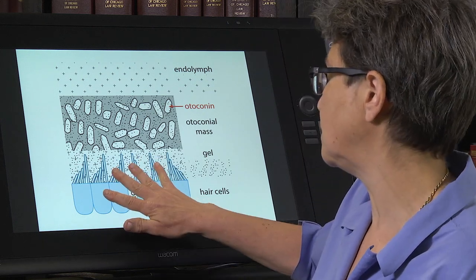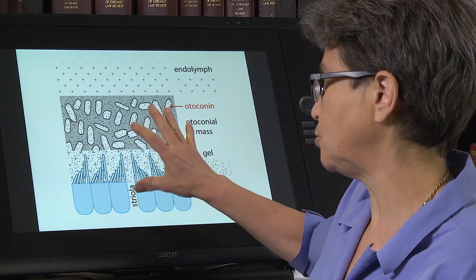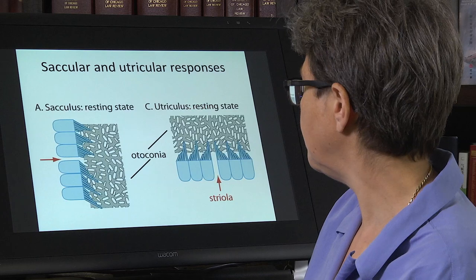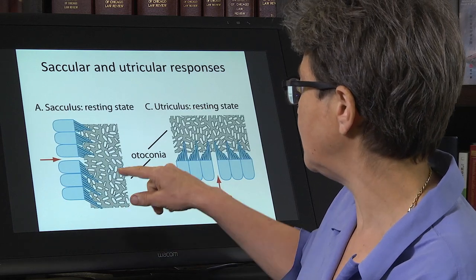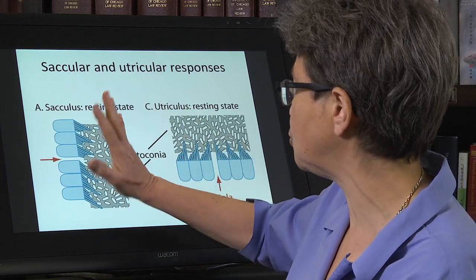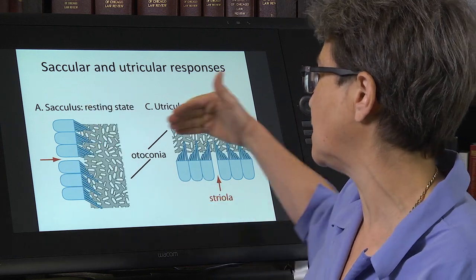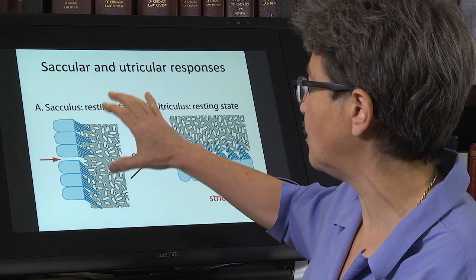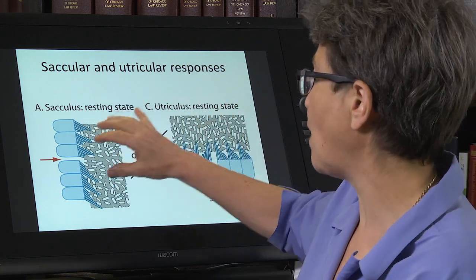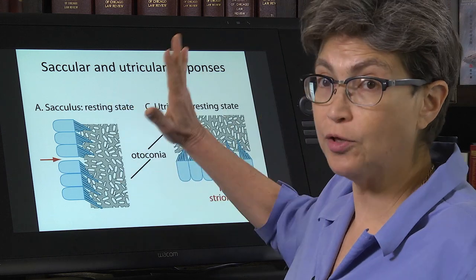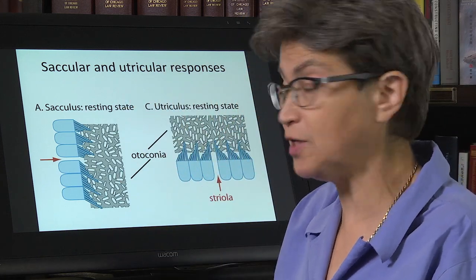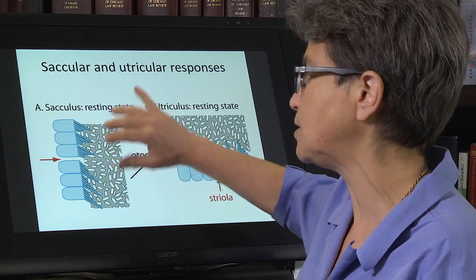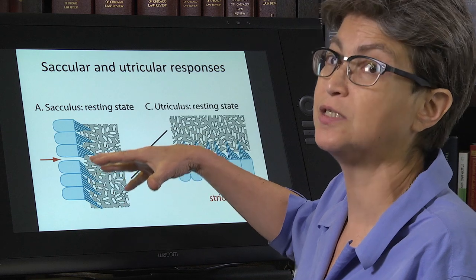And the organ of the sacculus and utriculus is called the macula. So it's either oriented towards or away. And this now shows you the resting state for the sacculus and for the utriculus. So what the sacculus is, it's oriented in the vertical direction. And so at rest, when all that's happening is that you're upright and gravity is acting upon your head, it's acting upon this otoconial mass, and there is resting discharge because the otoconial mass is displaced downwards.